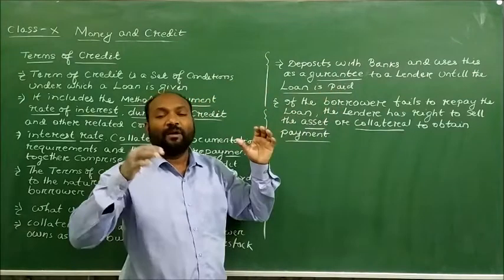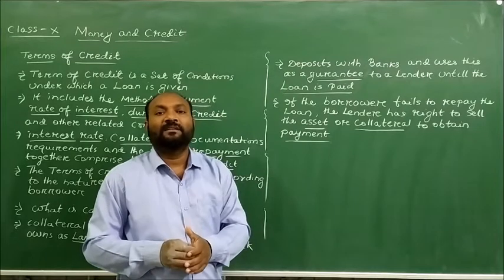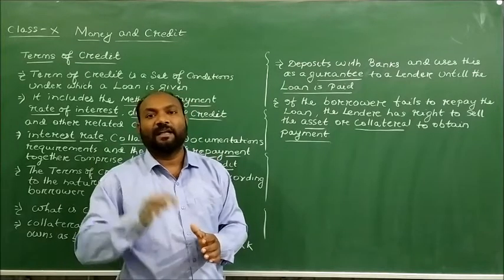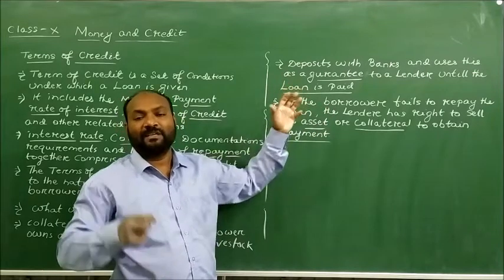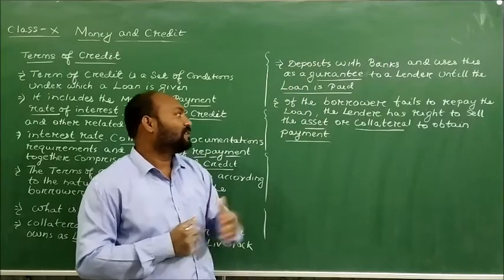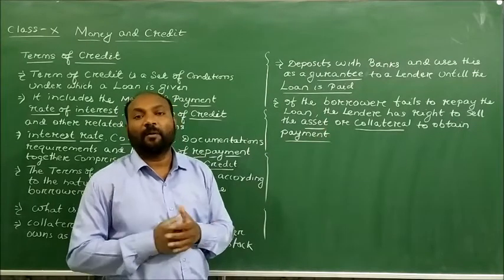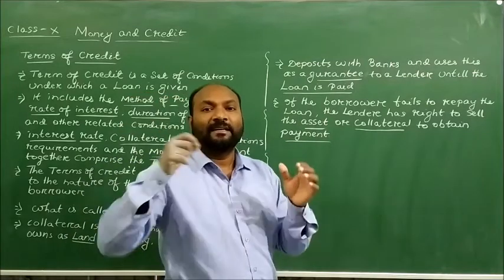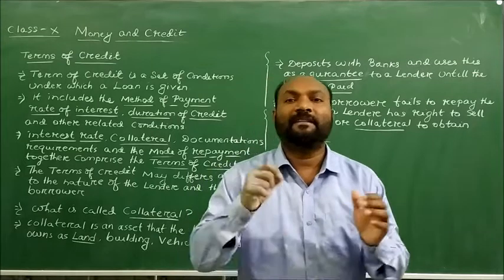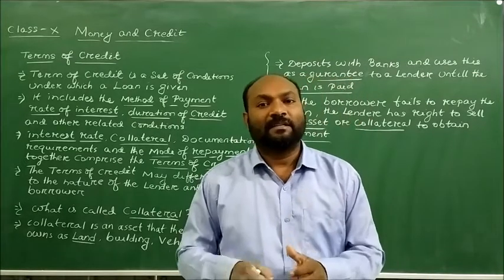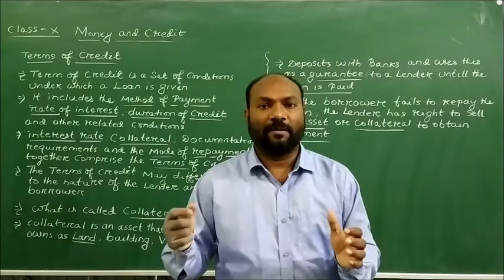When we have not paid the loan, all the collateral has to remain deposited with the lender. The lender will keep all these assets as a guarantee. If the borrower fails to repay the loan, then the lender has the right to sell the asset and obtain the payment. They take all these collateral as a recovery process, and to recover the loan amount, they sell the asset and obtain the loan amount from the borrower.